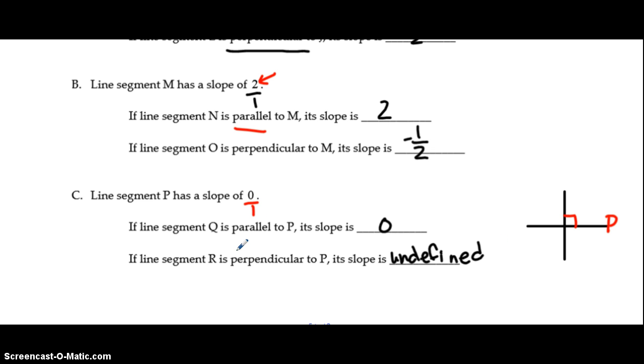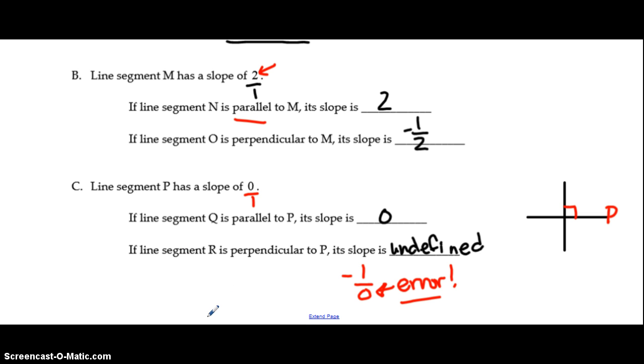And if you were to follow the same set of rules, 0 over 1, flip it, we would get negative 1 over 0. And any time we divide by 0, you're going to get that error message which tells us it is an undefined slope. And that is the end of our slope video.